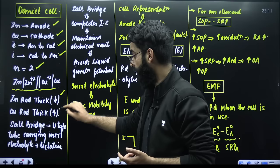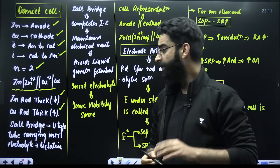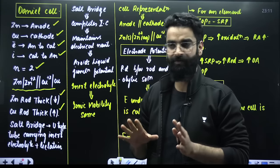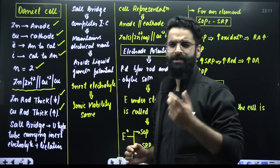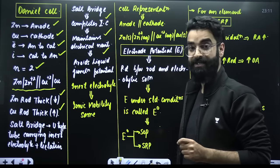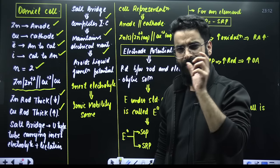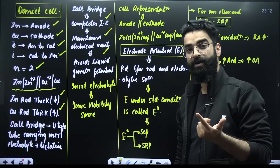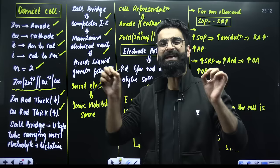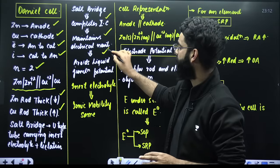When the Daniel cell works, the thickness of the zinc rod decreases while the thickness of the copper rod increases. The salt bridge is an inverted U-type tube which contains an inert electrolyte mixed with gelatin, forming a jelly-like paste. The salt bridge completes the internal circuit, maintains electrical neutrality, and avoids liquid-liquid junction potential. The cation and anion of the inert electrolyte used in the salt bridge must have the same ionic mobility — their speeds must be equal — so that the liquid junction potential is avoided.